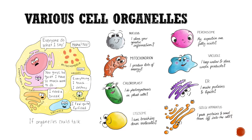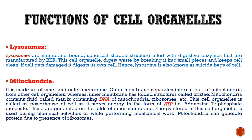In this slide you can see various cell organelles and how they are located inside a cell: the nucleus, the endoplasmic reticulum — which is further divided into rough endoplasmic reticulum and smooth endoplasmic reticulum — lysosomes, mitochondria, vacuoles, cytoplasm, Golgi body or Golgi apparatus, and plastids.